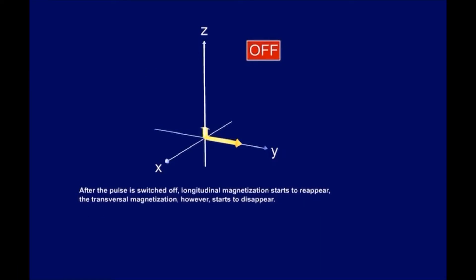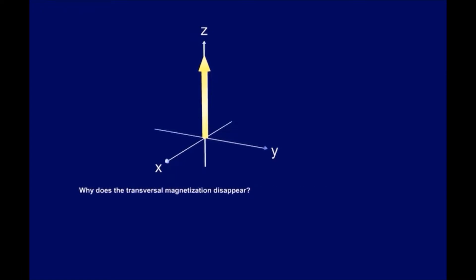After the pulse is switched off, longitudinal magnetization starts to reappear. The transversal magnetization, however, starts to disappear. Why does the transversal magnetization disappear? It is because the protons lose phase coherence, as we learned earlier. The loss of phase coherence results in decreasing transversal magnetization and thus loss of signal.